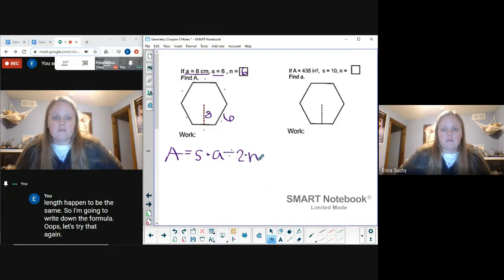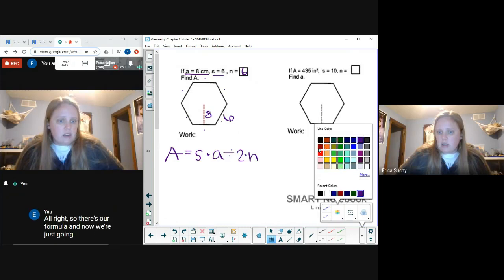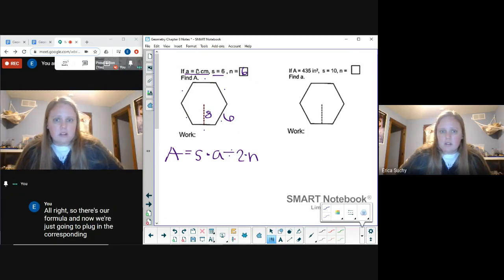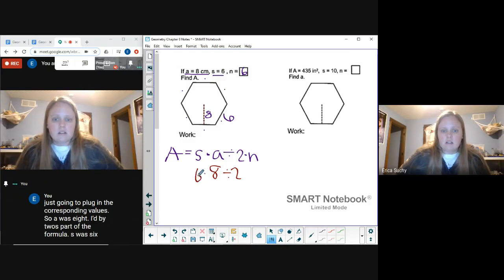All right, so there's our formula. Now we're just going to plug in the corresponding values. So a was 8, divide by 2 is part of the formula, s was 6, and n was also 6, again a coincidence.